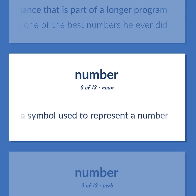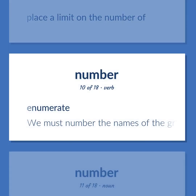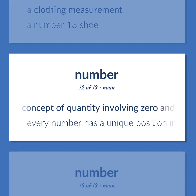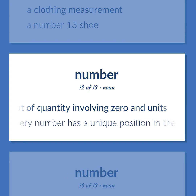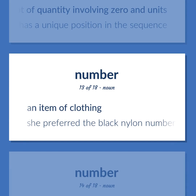A symbol used to represent a number. Place a limit on the number of. Enumerate — we must number the names of the great mathematicians. A clothing measurement — a number 13 shoe. A concept of quantity involving zero in units — every number has a unique position in the sequence. An item of clothing — she preferred the black nylon number.